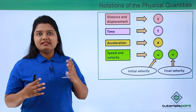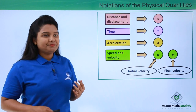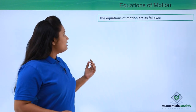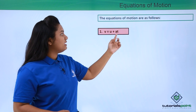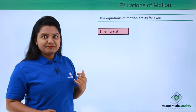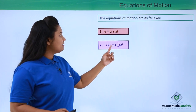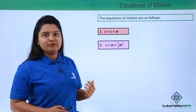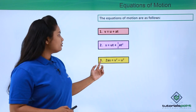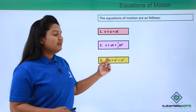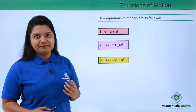So our first equation of motion is v = u + at. The second equation of motion is s = ut + ½at². And the third equation of motion is 2as = v² − u².